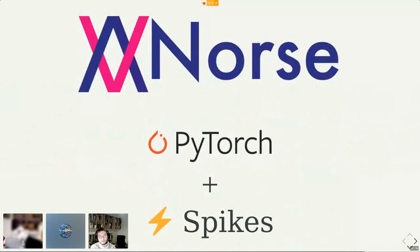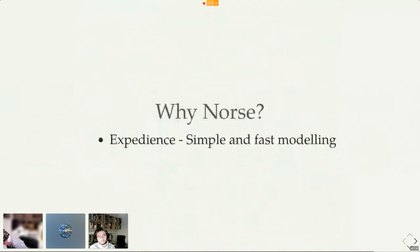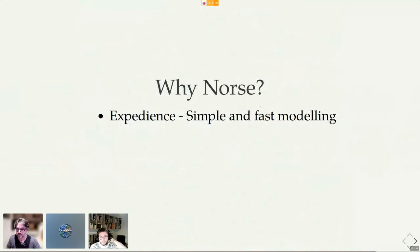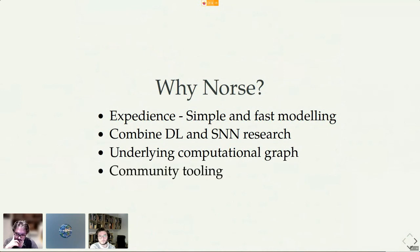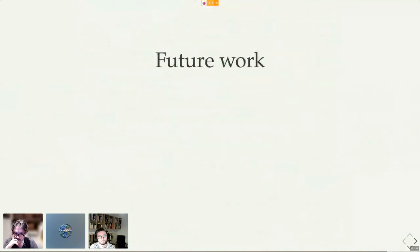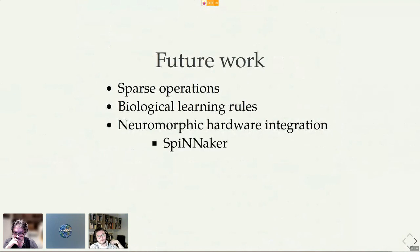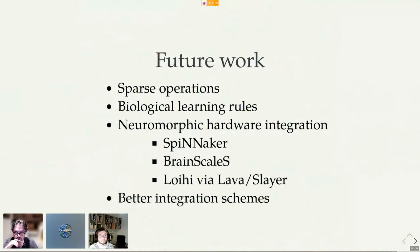I'm actually just getting to the summary slide, which is to say that we are basically basing our work a lot on PyTorch and what they've done, with the added dynamics of spikes. We've added quite a lot of dynamics, but I think the reason for Norse specifically is because it's very expedient to use. You can combine deep learning and spiking network research. I don't think they're mutually exclusive. There's an underlying computing graph you can then use to export, and there's a host of community tooling. So the final note really here is that there are a lot of future work that's very interesting to do, specifically working on biological learning rules and better integration schemes so we can have proper support for continuous learning and continuous neurodynamics.